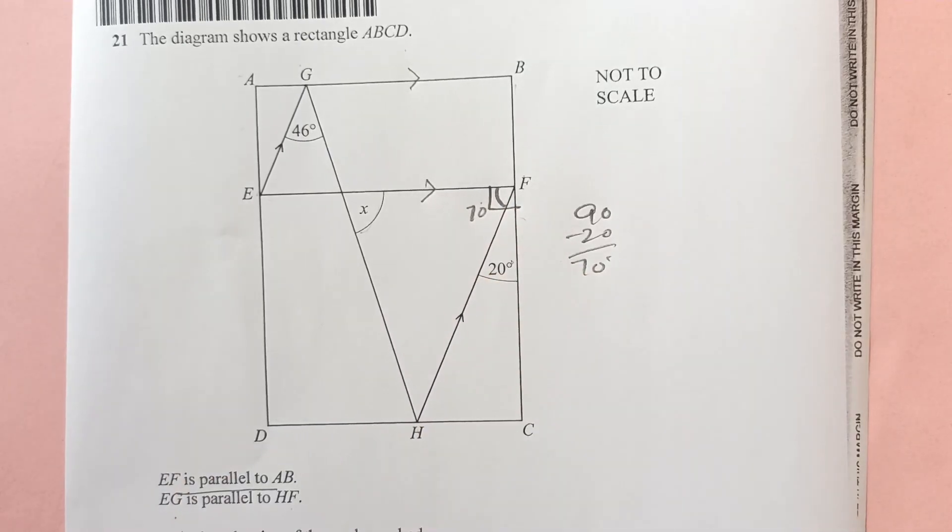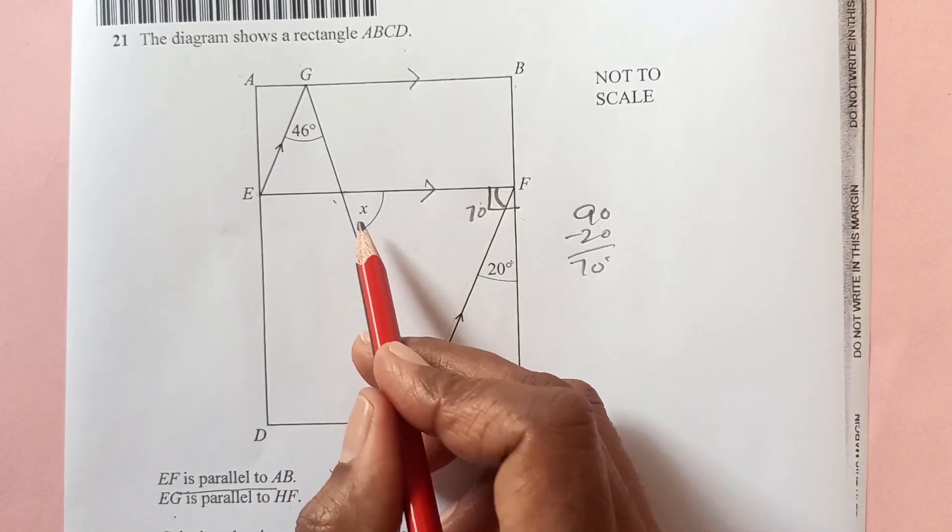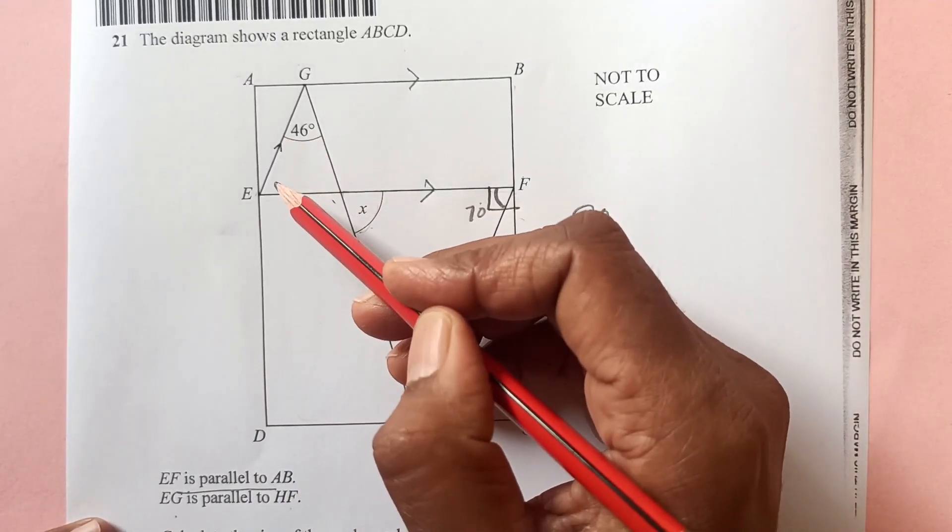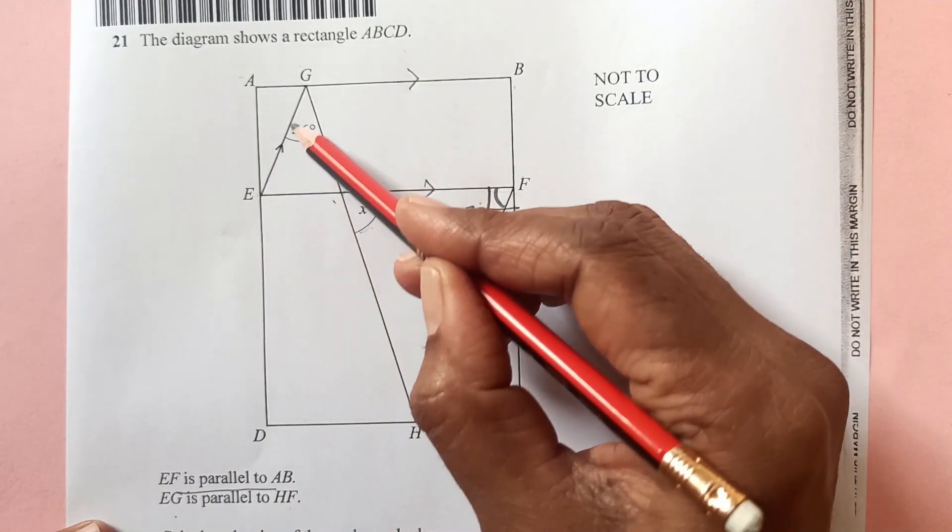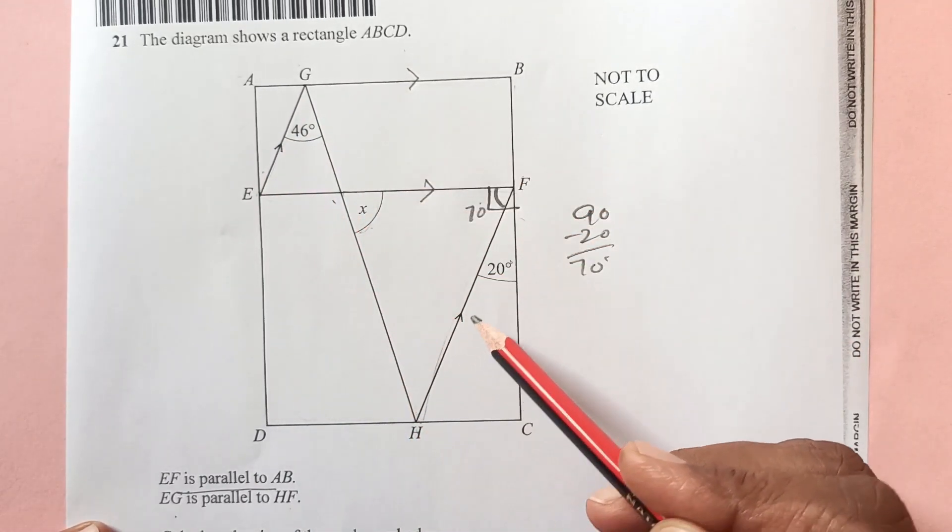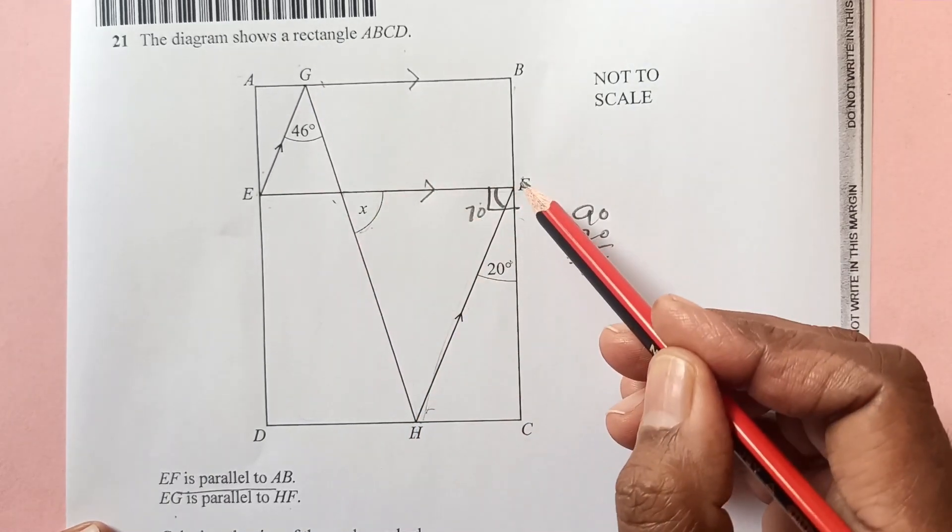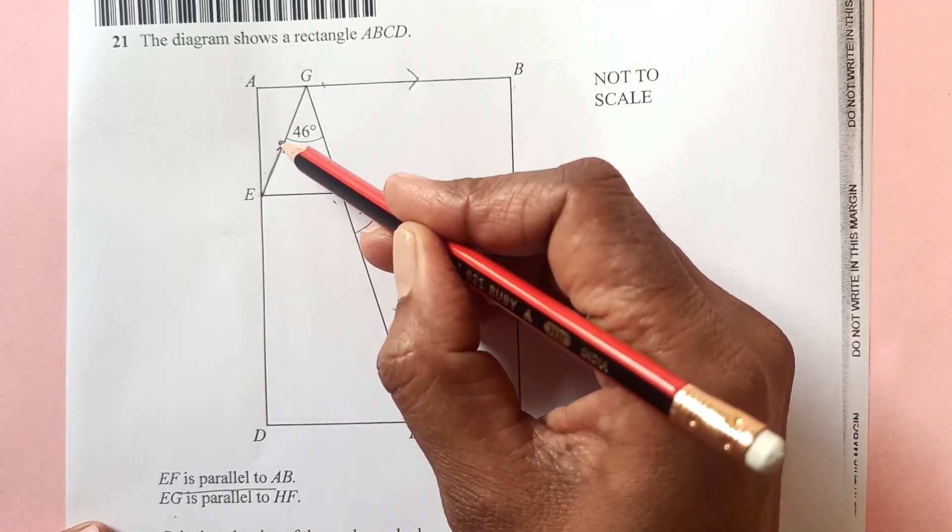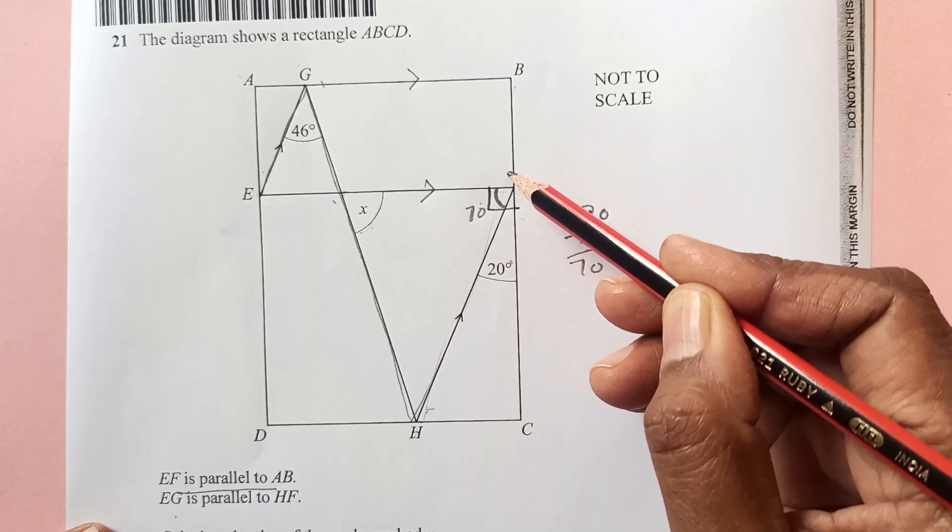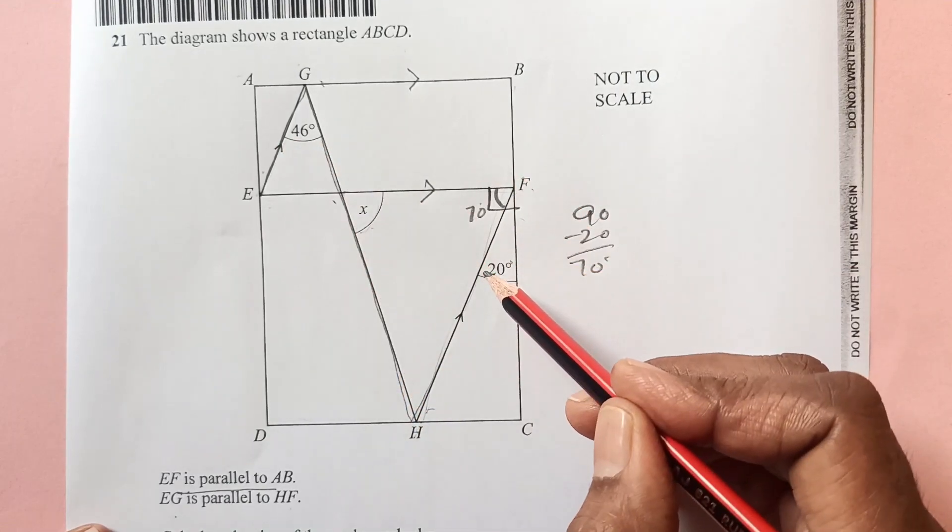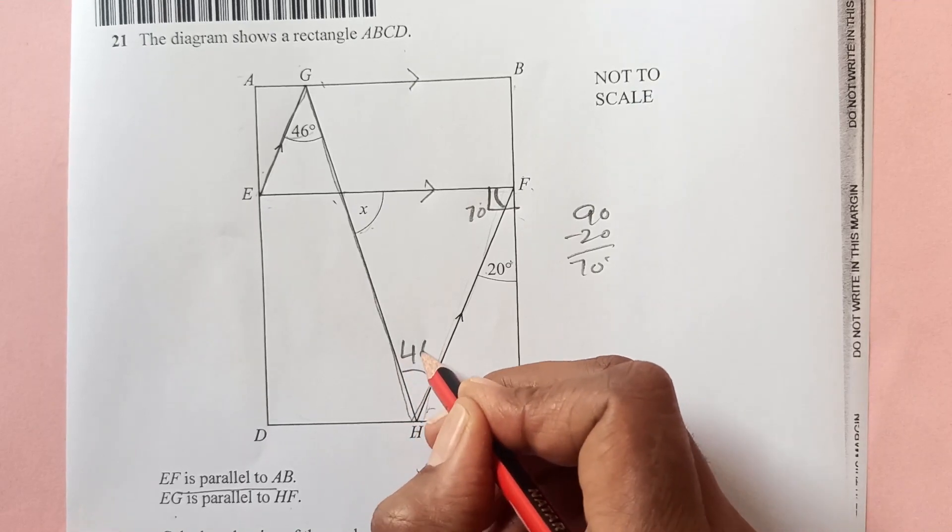So this angle, this much, is going to be 70 degrees. So we have now one angle of this triangle and another one is x. And here we have given 46, so there might be something to do with this. If you see, EF and HF, EG and HF, they are parallel, so they make a shape of Z, right, here like this. If this line is parallel to this, that means this angle and this angle are alternate angles.